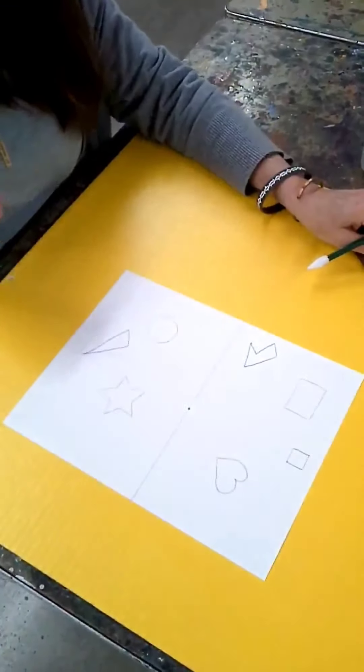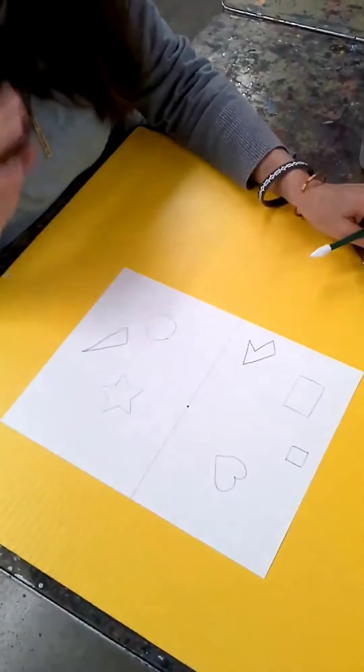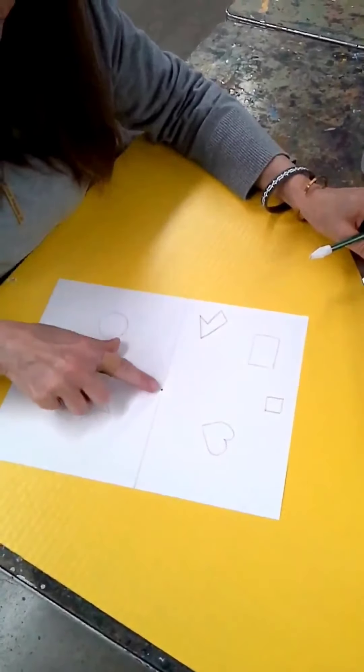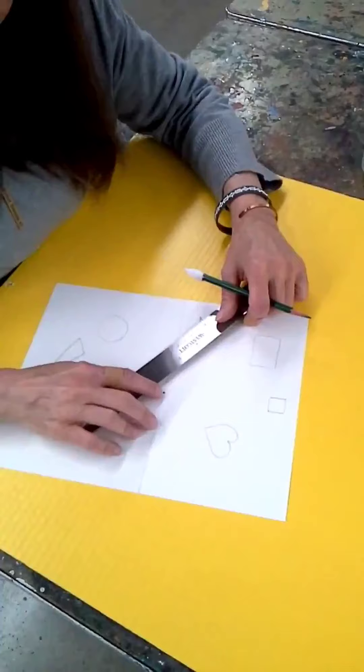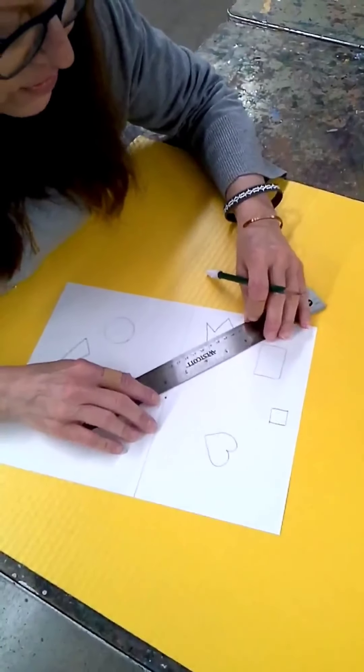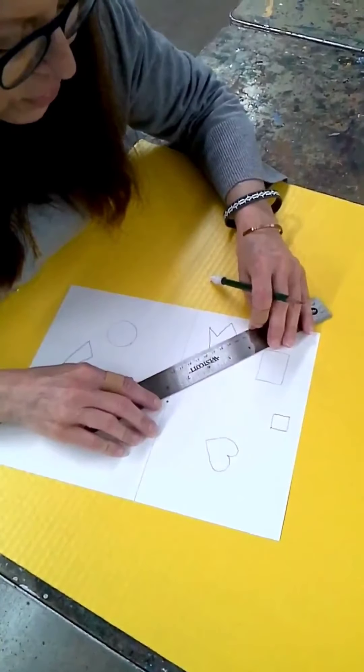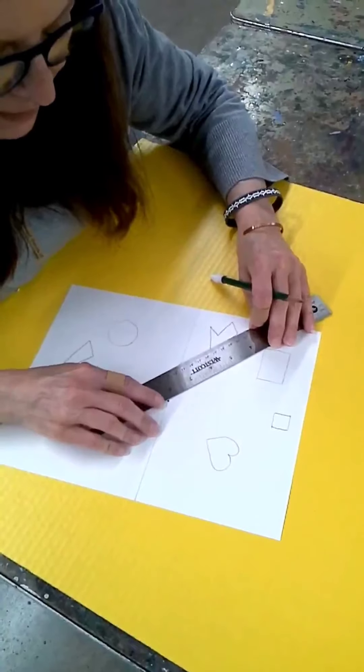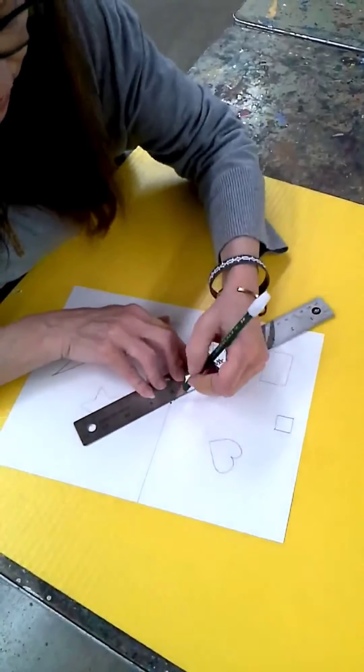You're going to start with your conversion lines. So that means you're going to take your ruler, line it up to your dot, and then to the corner of your shape, you are going to draw a line.